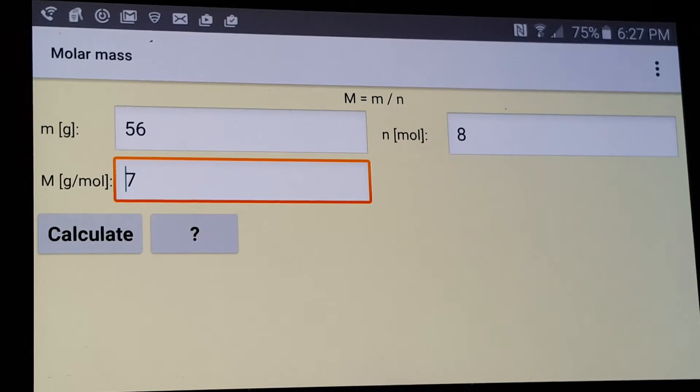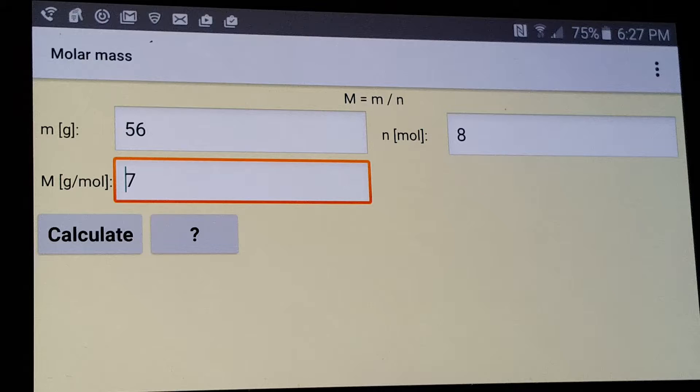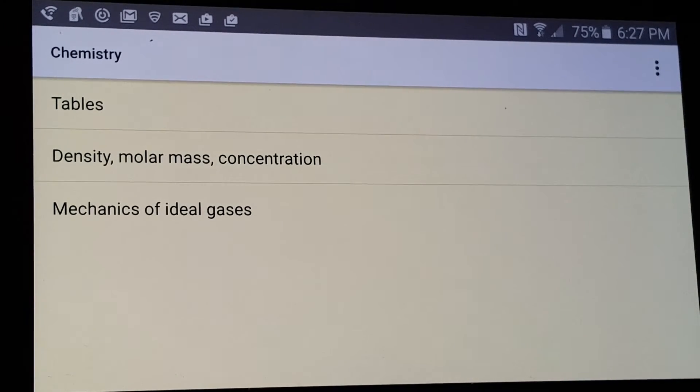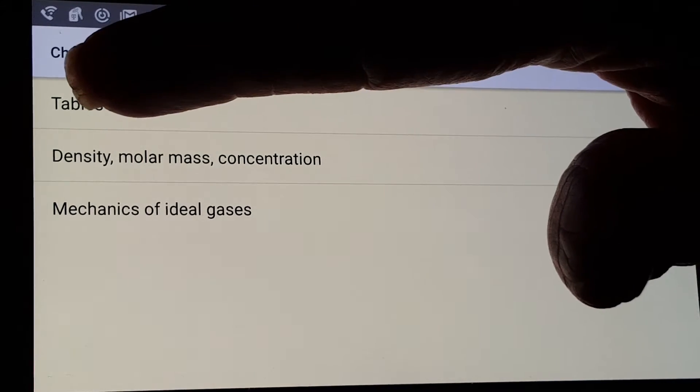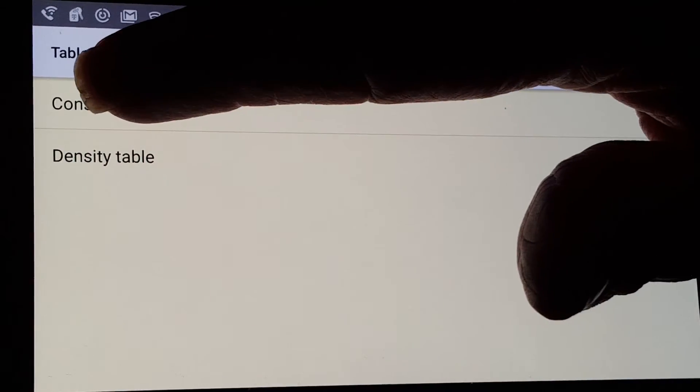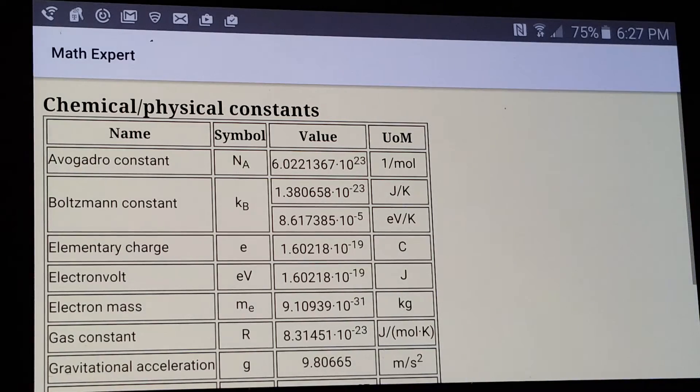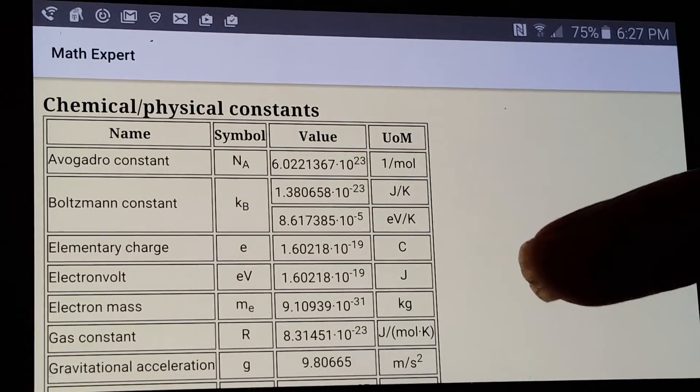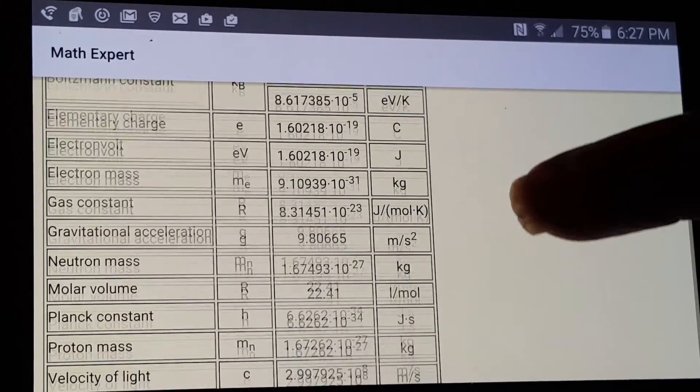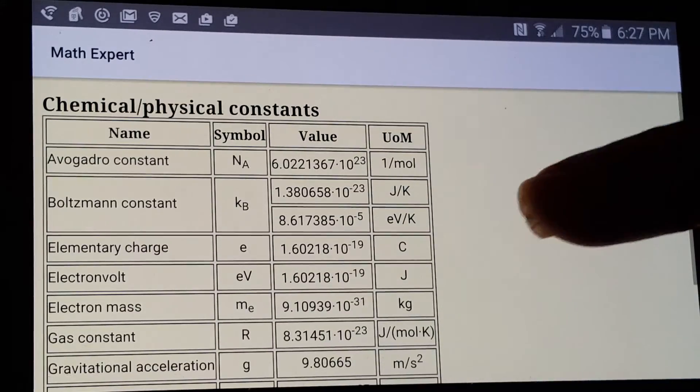There's one more feature I would like to show you in this chemistry section. We have tables. First, I'll show you the constant table. It lists all the physical and chemical constants that you're going to use for any problem in chemistry.